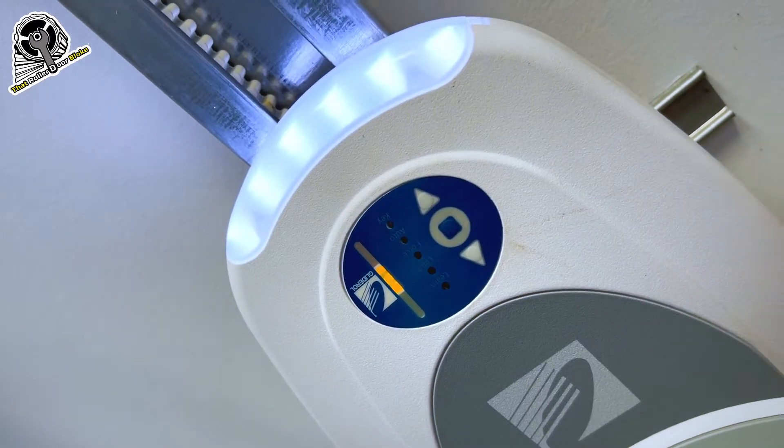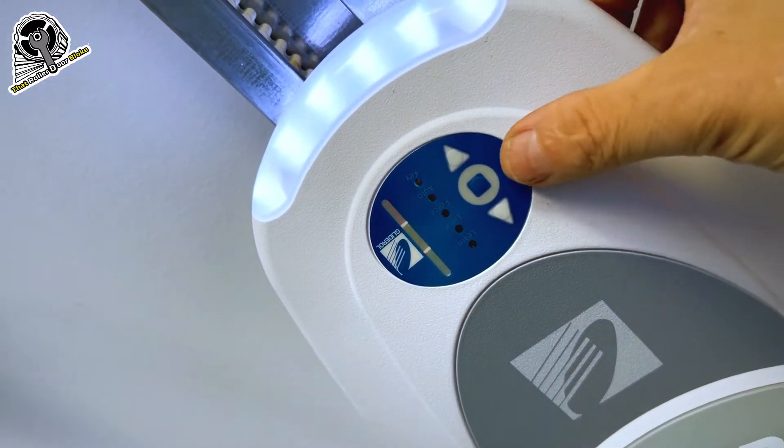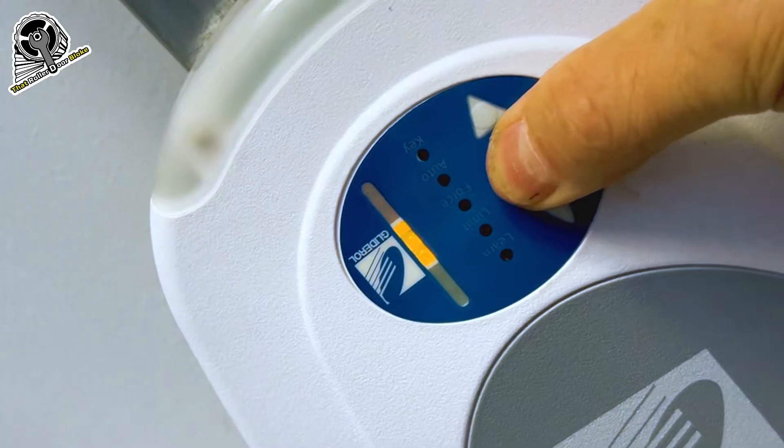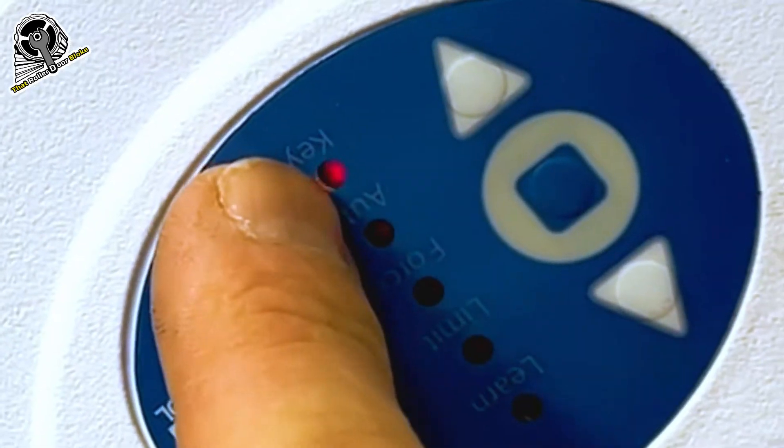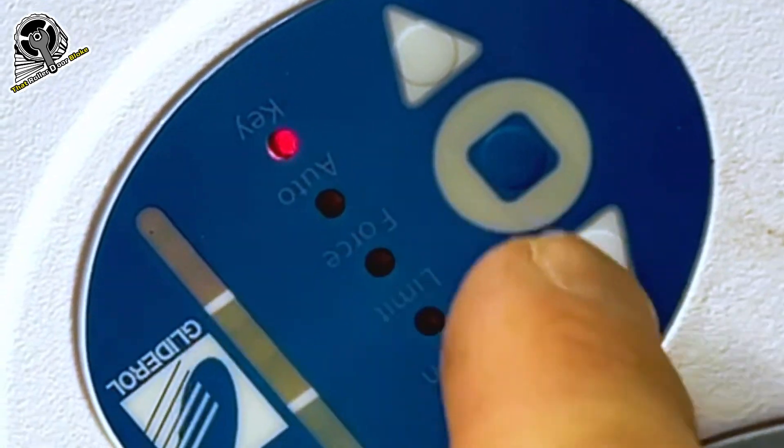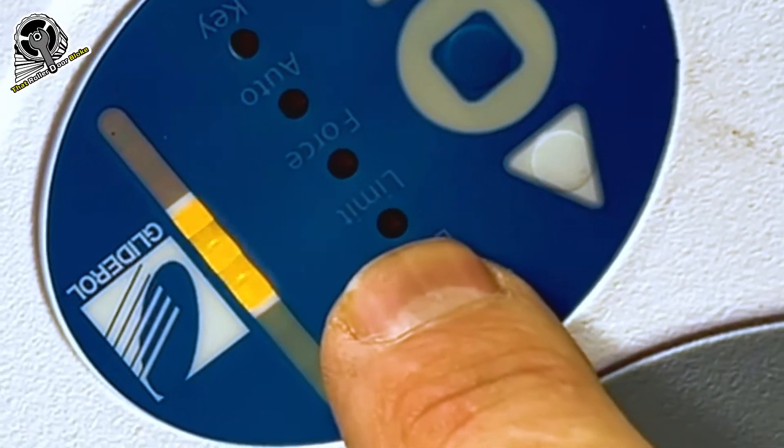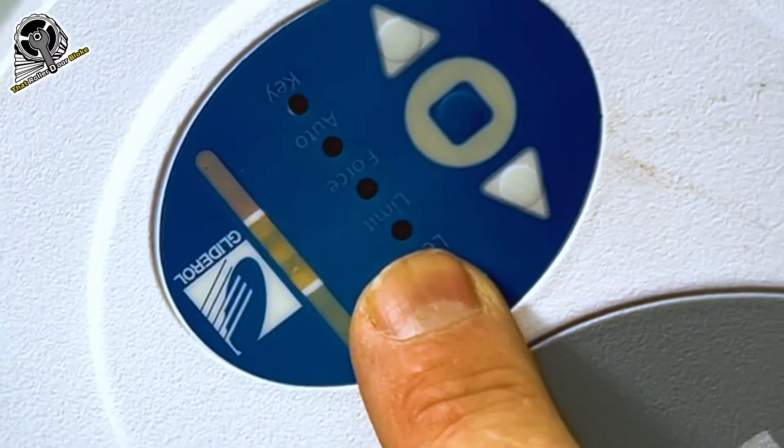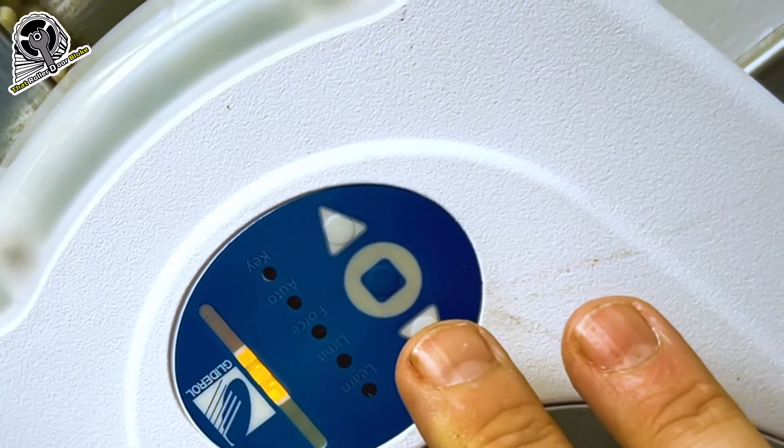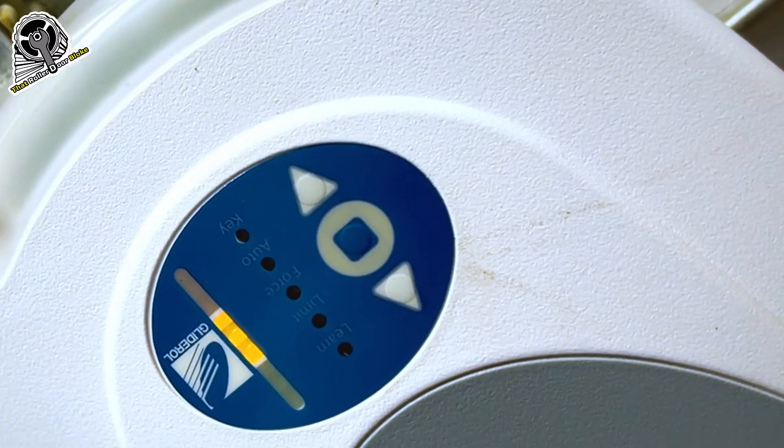So to set the limits, we need to activate the limit mode. Hold this center button right here, and then you have the first red light show up on key. Now use the arrows to get the limit light to show up. Now as you can see, you've only got a very short period of time to do this. They don't give you much time at all.